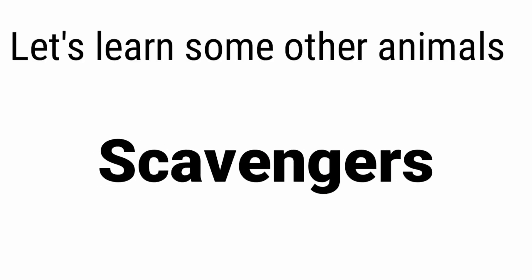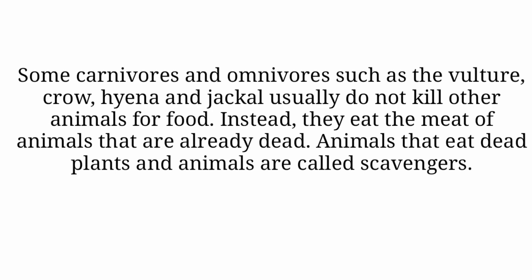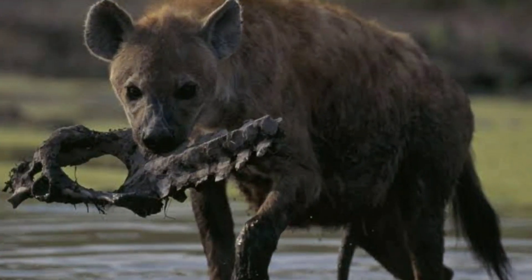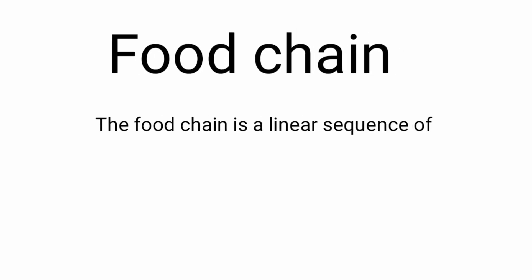Now let's learn about scavengers. Some carnivores and omnivores such as vulture, crow, hyena and jackal usually do not kill other animals. Instead, they eat the meat of animals that are already dead. Animals that eat dead plants and animals are called scavengers.